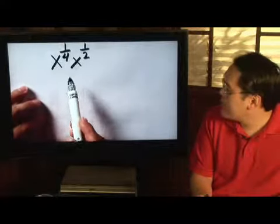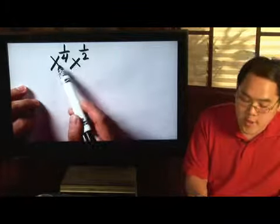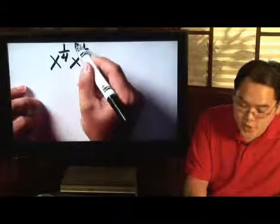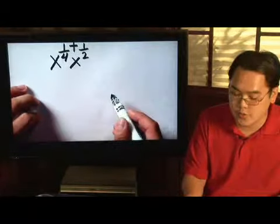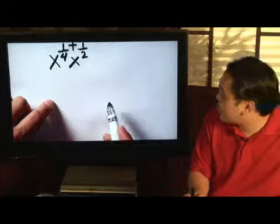Suppose you want to simplify x to the one-fourth times x to the one-half. Because you're multiplying the same base with different exponents, you're actually going to be adding the two. So your job is to find out what one-fourth plus one-half is.